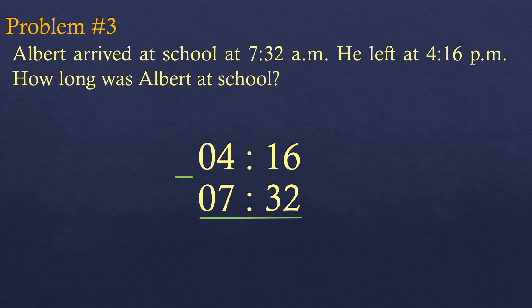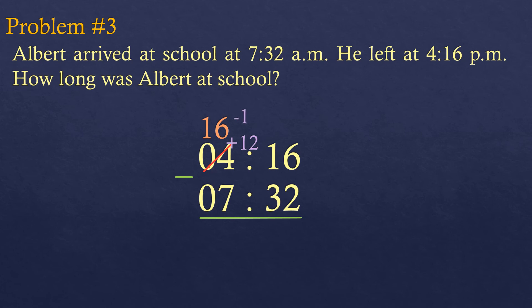To solve this, we convert the afternoon time to 24-hour time by adding 12 to the hours. So 4 plus 12 is 16, meaning 16:00 is the same as 4 in the afternoon. Now subtracting, the minutes on top (16) are smaller than the bottom (32), so we borrow 1 hour from 16, making it 15, and the 16 minutes becomes 76.